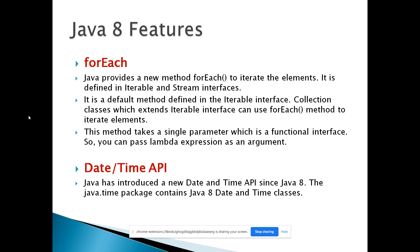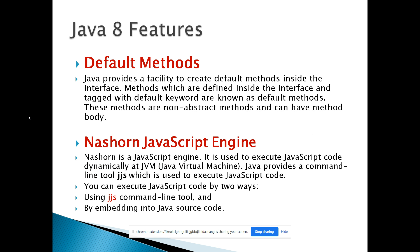A Date and Time API was introduced in Java 8 under the java.time package, providing new APIs for date and time handling. There are also default methods in interfaces: using the 'default' keyword within an interface, Java 8 allows you to create default methods. These are concrete methods defined inside interfaces, and Java provides these default methods as part of the java.util functional interface support.